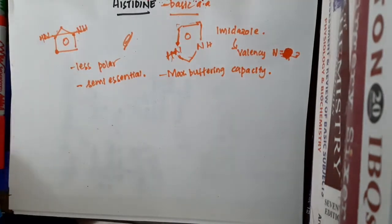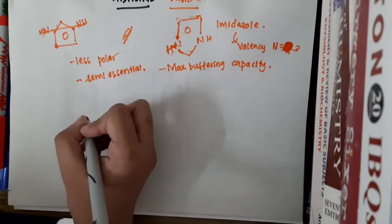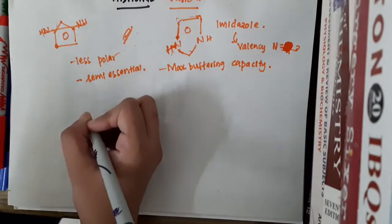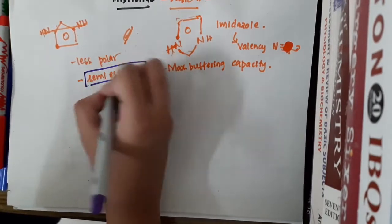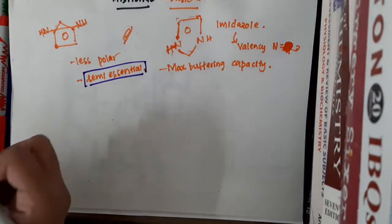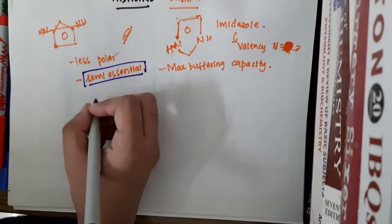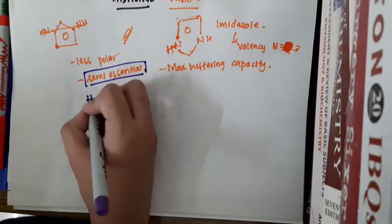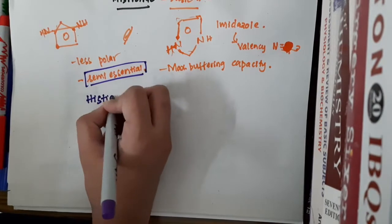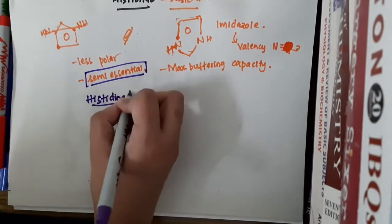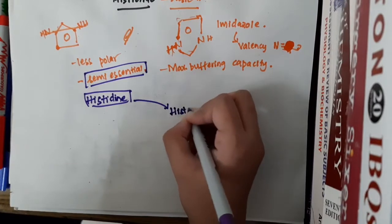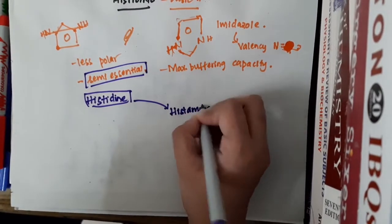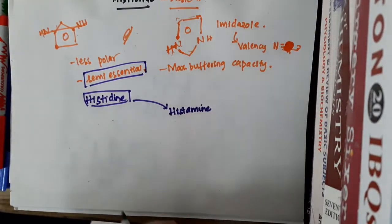Now if you see the synthesis of histidine — we don't need to learn it because it is a semi-essential amino acid obtained from the diet. What we should learn is what compounds are produced from histidine. Histidine forms some special compounds — it gives rise to histamine; histidine is a precursor for histamine.